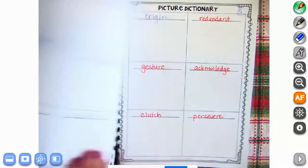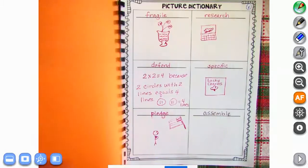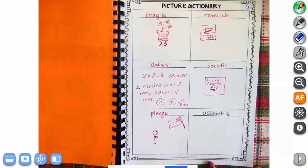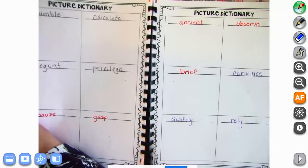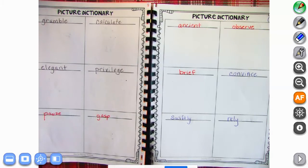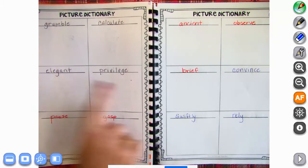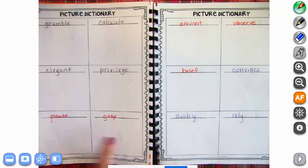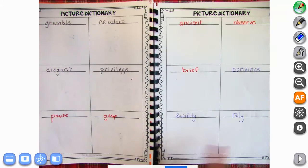All right, in your picture dictionary we should have all of the words written down: fragile, research, defend, specific, pledge, assemble. You're drawing your pictures in there of what you remember when you see that word. The next page: grumble, calculate, elegant, privilege, pause, gasp, ancient, observe, brief, convince, swiftly, rely.